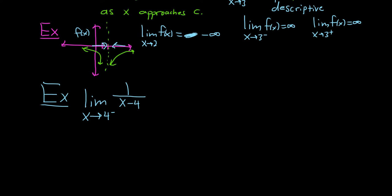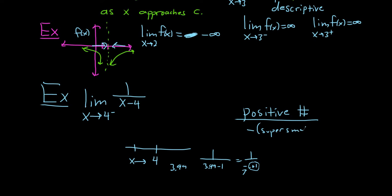Let's do it using intuition. So up top we have a number, which is 1. So we have a positive number. What's happening on the bottom? Let me draw a little picture. So here's 4. And x is over here because it's approaching from the left. So it's getting really close to 4 from the left, getting infinitely close to 4. So pick a number less than 4 that's close to 4, like 3.99. So if you do 1 over 3.99 minus 4, you get 1 over negative 0.01.